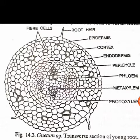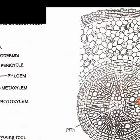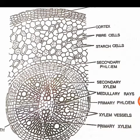The new cambium forms between the primary xylem and primary phloem. A ring of cambium forms joining all the vascular bundles. This new ring of cambium cuts the secondary xylem towards the center and the secondary phloem towards the periphery. So this new cambium formed during secondary growth cuts secondary xylem towards the center and secondary phloem towards the periphery.